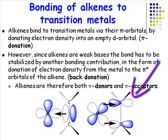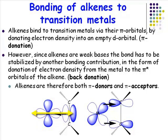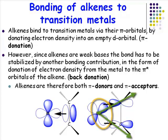The transition metal orbitals involved are exactly the same as those we looked at for carbon monoxide and for phosphines. We have an unoccupied orbital lying in this plane, and in an octahedral environment this would be one of the EG set. We also have an unoccupied orbital lying with this geometry.